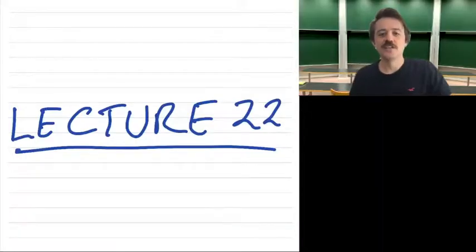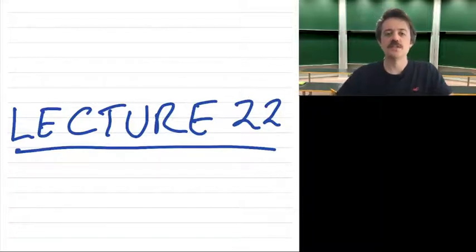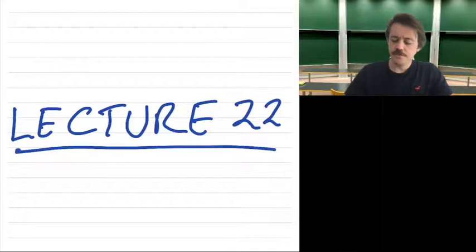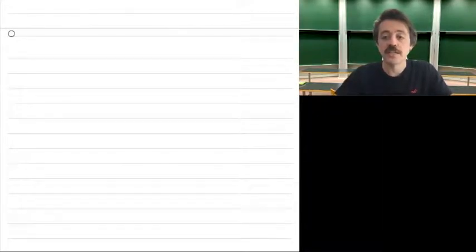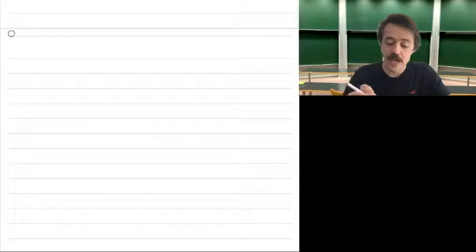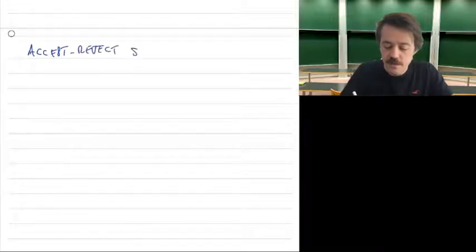Welcome all to this 22nd lecture of Principles of Statistics. In the last lecture we started with sampling methods and today we're going to continue with sampling from general distributions. We're going to focus on two different algorithms, the first one being the so-called acceptance or accept-reject sampling algorithm.